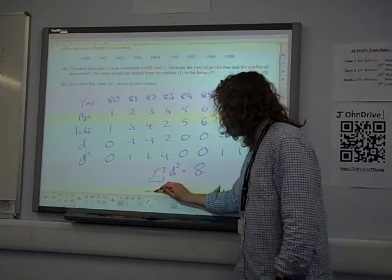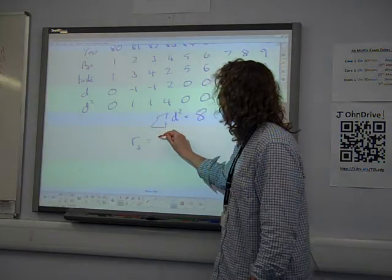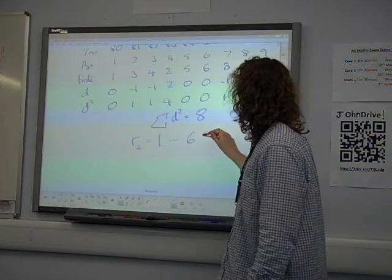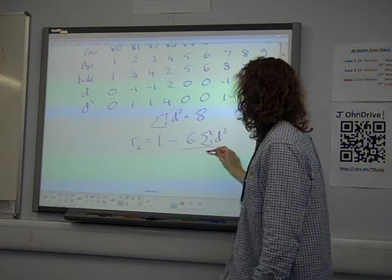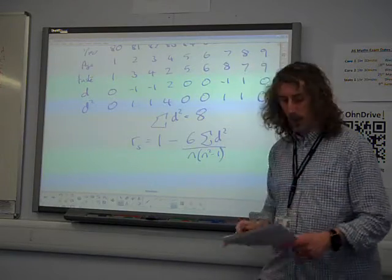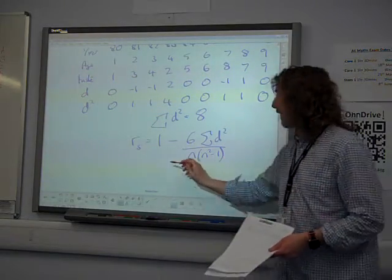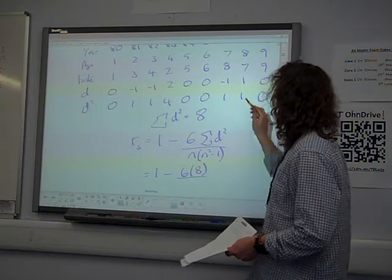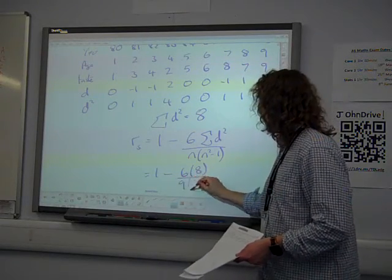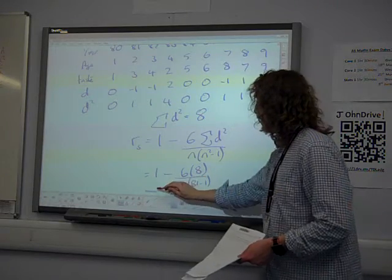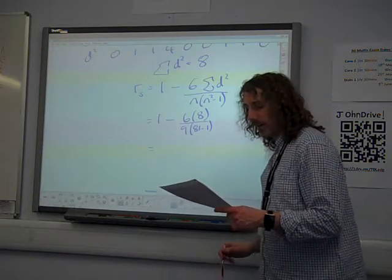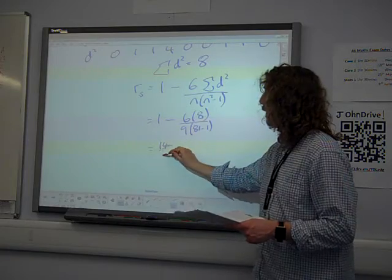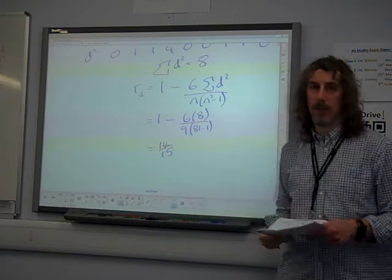And the Spearman's rank formula is given for you on the formula sheet, 1 minus 6 sigma d squared over n, n squared minus 1. All that's left is to throw some numbers into that, 1 minus 6 times 8, over, there were 9 numbers here, weren't there? So, 9 times 80, minus 1, gives us a fantastically high value of 14 over 15.